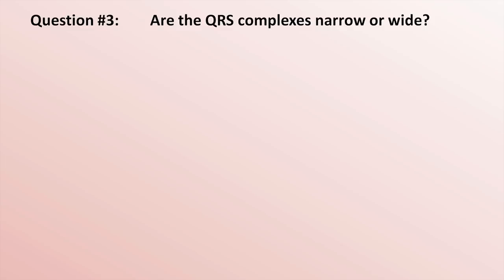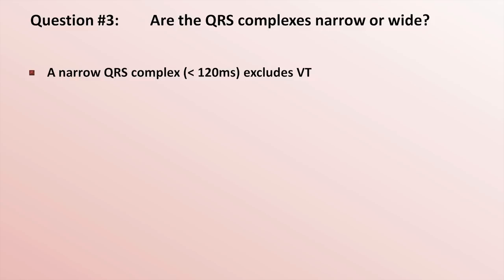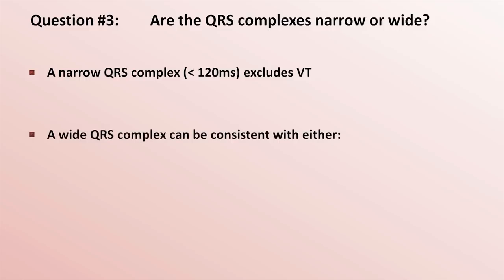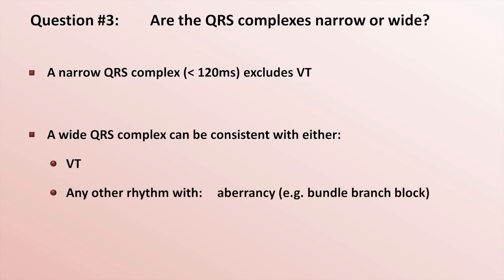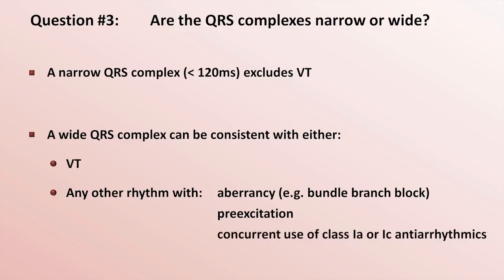Question 3: Are the QRS complexes narrow or wide? A narrow QRS complex — that is, one less than 120 ms in duration — excludes VT. A wide QRS complex, on the other hand, can be consistent with either VT or with any other rhythm with the addition of aberrant conduction, such as bundle branch block, pre-excitation (meaning an accessory conductive pathway between the atria and ventricles), concurrent use of class 1a or class 1c antiarrhythmics, or profound hyperkalemia.